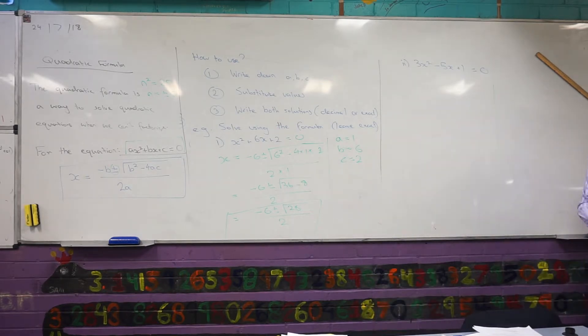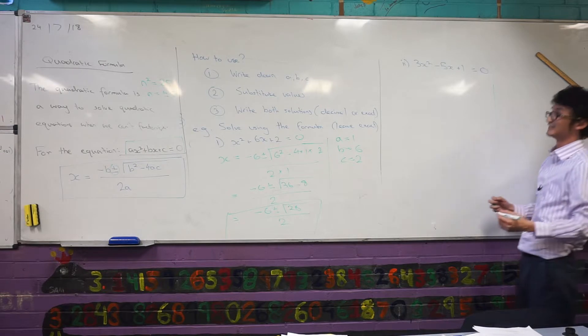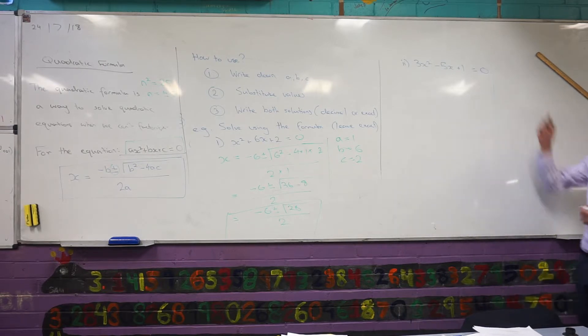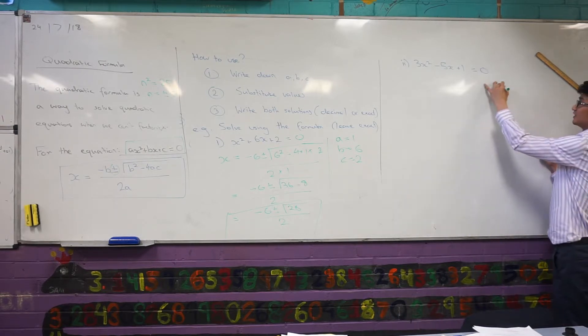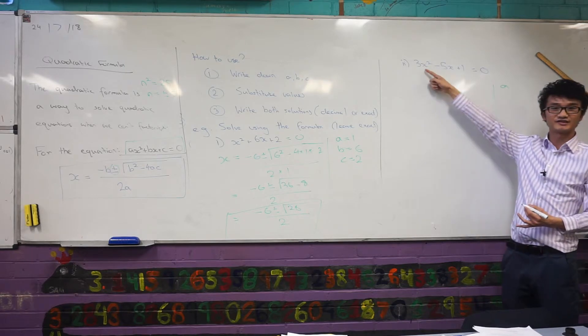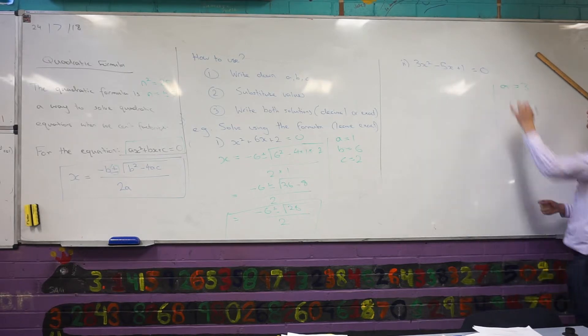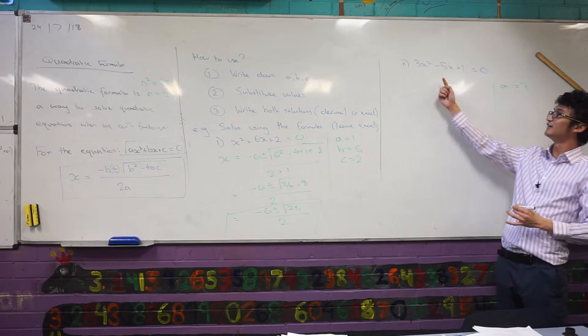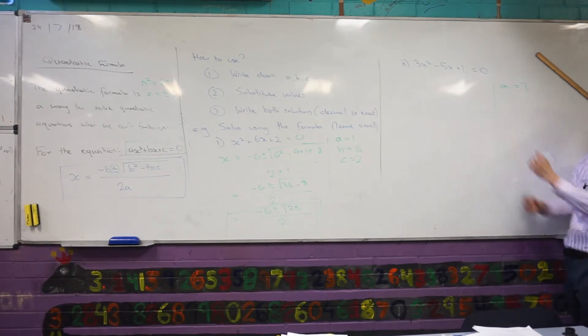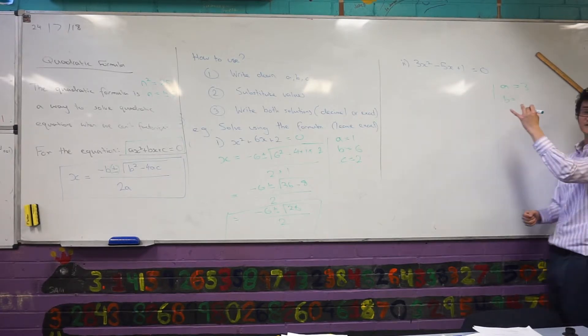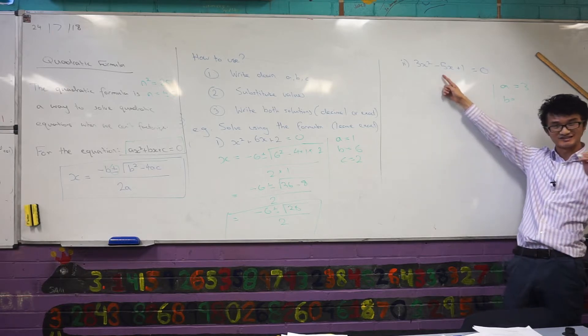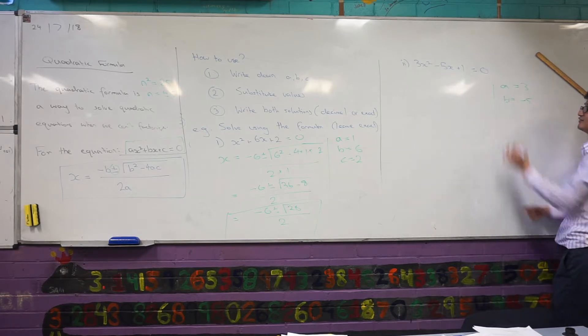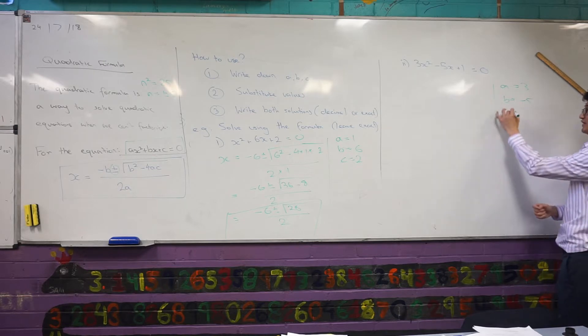So the final answer, minus six plus or minus root 28 over two there. To avoid any mistakes, or at least identify any mistakes in the future that I might make, I'm always going to write down what my a, b and c values are. My a is obviously the number in front of x squared, that's just three. Abby, what was the number in front of x? What's my b value going to be? Be careful. Yeah, so be careful. Anytime there's a negative there, you also have to consider that. That's also going to be negative five. My c though, that's fine, that's just a positive number.